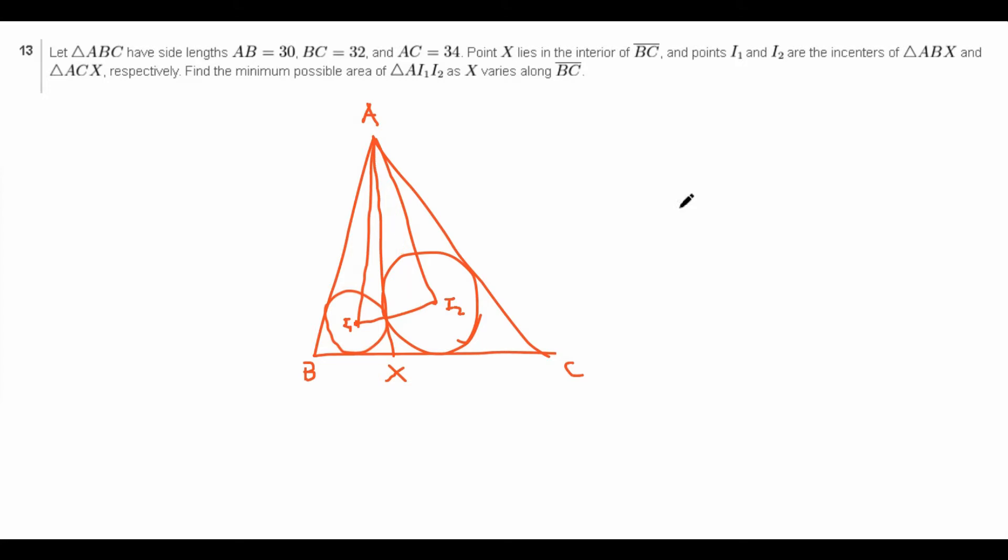Because they are connecting the centers of these two in circles, and the in circles themselves don't have any significantly nice properties with respect to each other, since they're not tangent or anything like that. So perhaps finding the area using I1, I2 and the height is probably a bad idea.